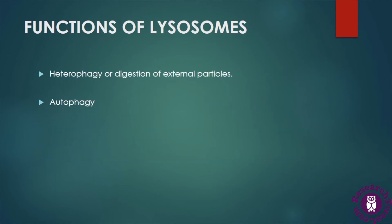Now let's understand the functions of lysosome. There are many important functions performed by lysosomes, and they consist of two types: heterophagy and autophagy. Heterophagy means digestion of external particles from outside the cell. These enzymes catalyze the breakdown of different types of polysaccharides, proteins, and nucleic acid molecules, helping in the intracellular digestion of food. This is found in unicellular organisms like protozoans and sponges where a digestive system is absent, so the lysosome performs digestion of food — hence called heterophagy.